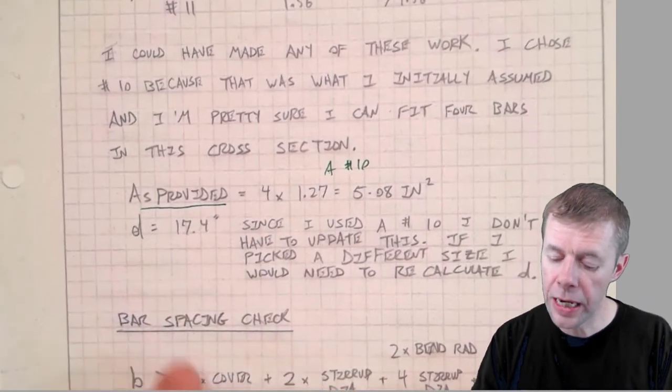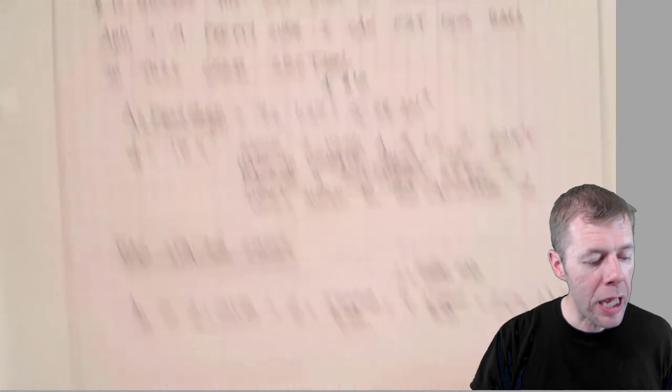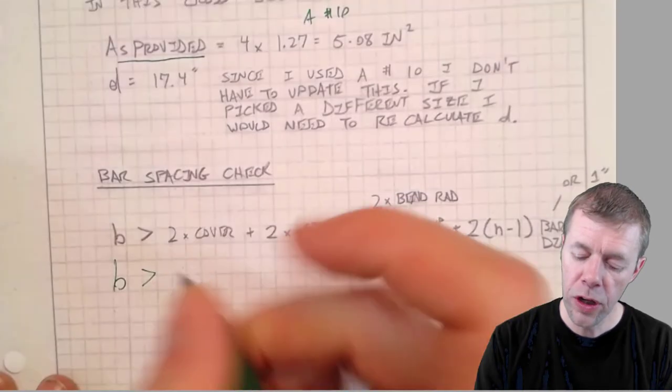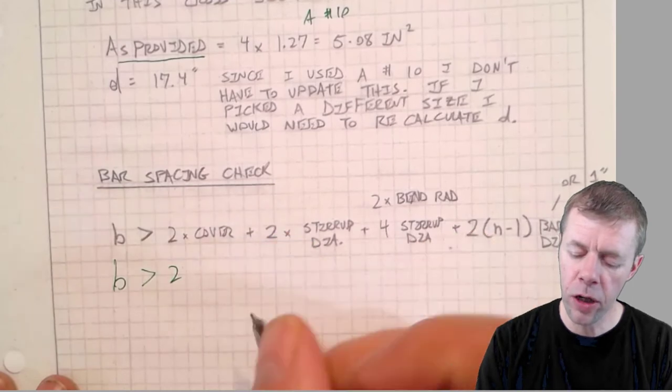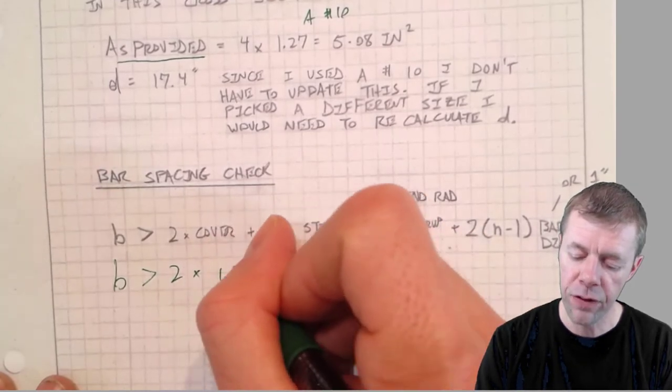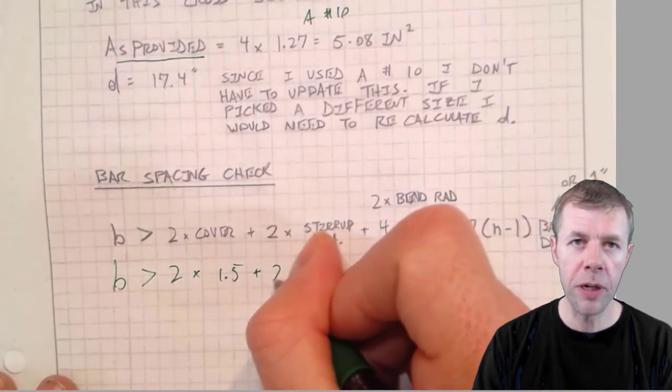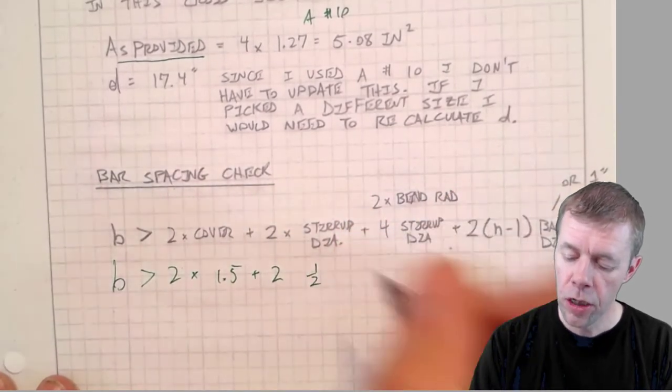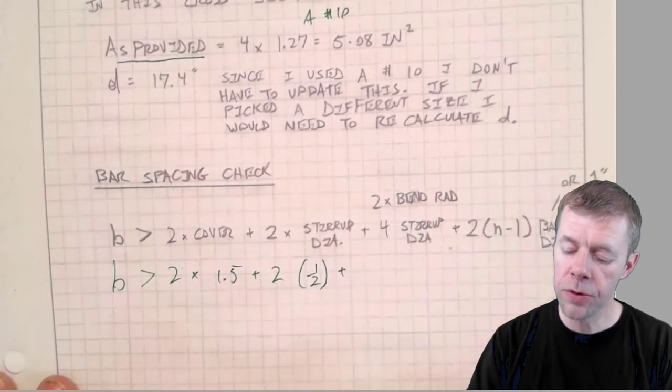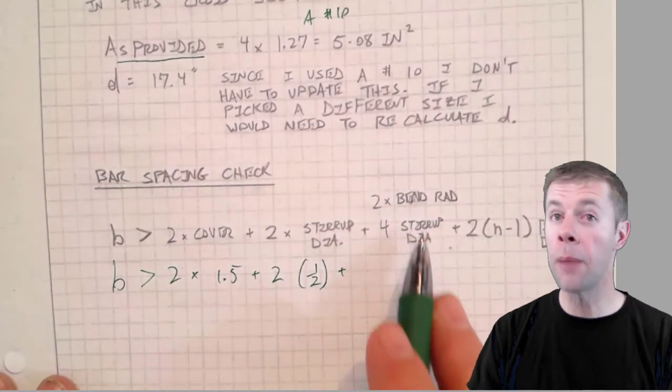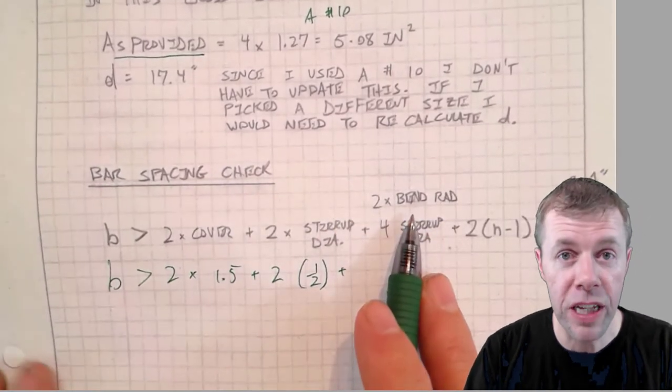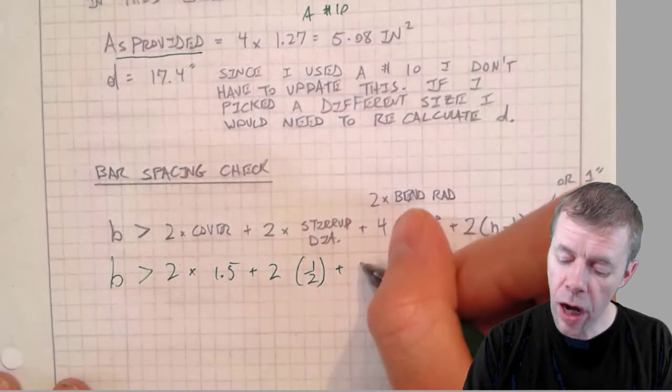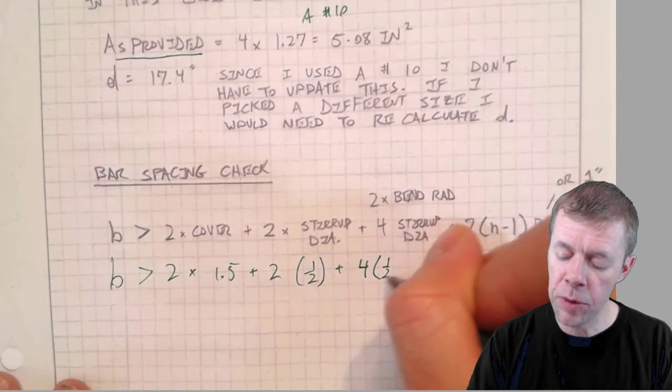Now I'm going to check the bar spacing: two times my cover (1.5 inches) plus two times my stirrup diameter (half an inch) plus four times my stirrup diameter, that's two times the bend radius. Watch a previous video about bend radii, it was cool. Four times my stirrup diameter gives me my bend radius.